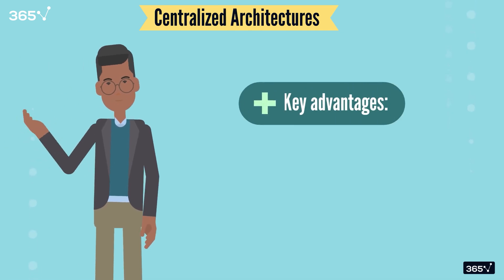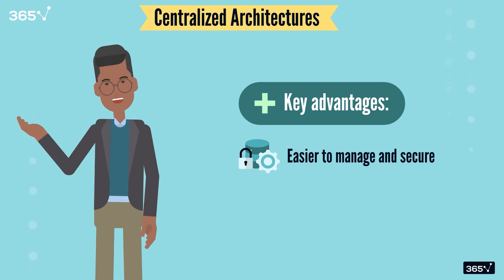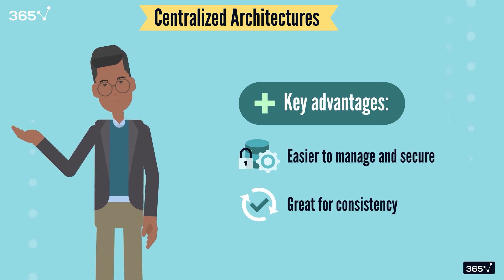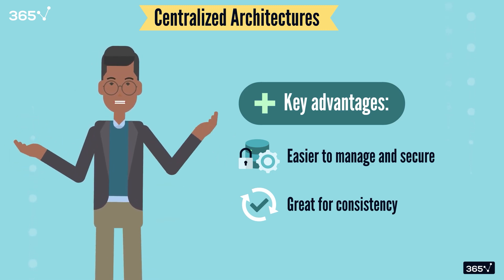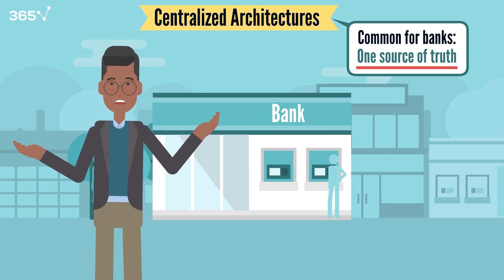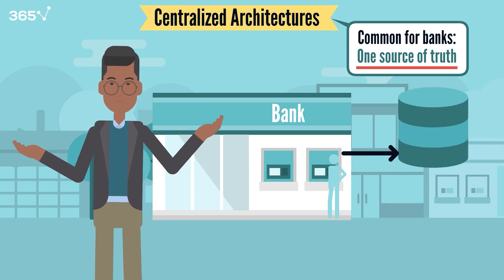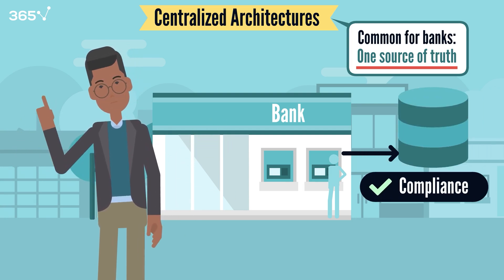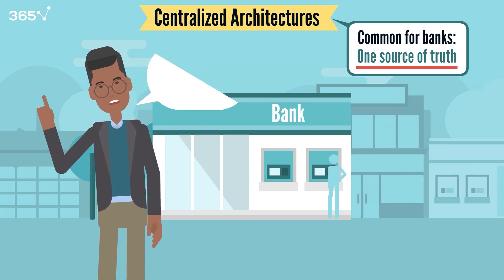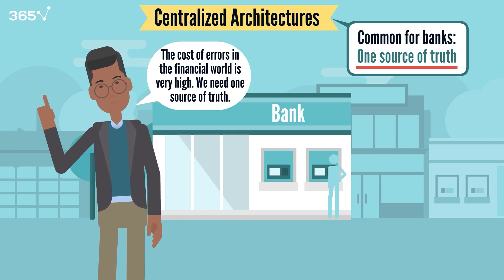There are some advantages to building a centralized data architecture. It's easier to manage and secure, since everything's in one place, and it's also great for maintaining consistency, since you only have one version of the truth. Centralized data architectures are common within banks, especially in the processing of financial transactions. All customer data is stored in a central database to ensure compliance with organizational and state laws, and to accurately associate transactions with the user. The cost of error is very high in financial systems, therefore they tend to maintain one source of truth.